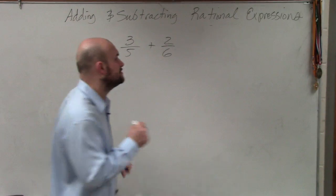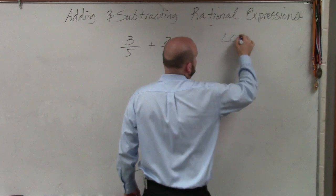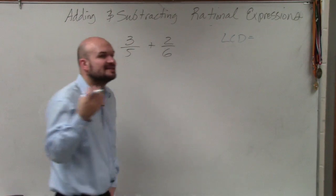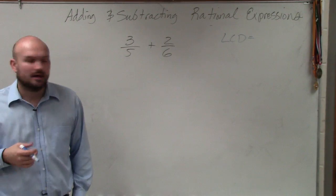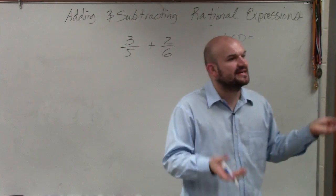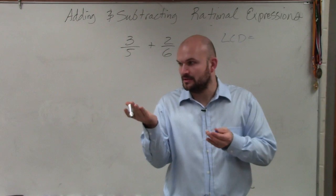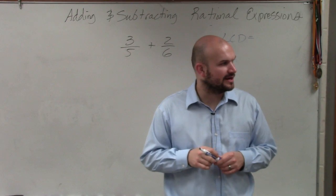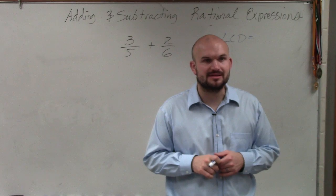So the first thing we have to do is determine the LCD. Find the common denominator of 5 and 6. And what that means is the smallest number that 5 and 6 divide into. So does anybody want to raise their hand and see what the LCD of 5 and 6 is?